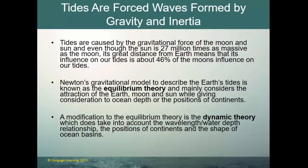Newton's gravitational model to describe earth's tides is known as the equilibrium theory, which mainly considers the attractions of earth, moon, and sun while giving some consideration to ocean depth and the position of continents. The dynamic theory modifies this by also taking into account the wavelength of the wave, water depth relationships, positions of continents and ocean basins, water density, seafloor topography (or bathymetry), and many other subtle effects that change how tides work in different basins.